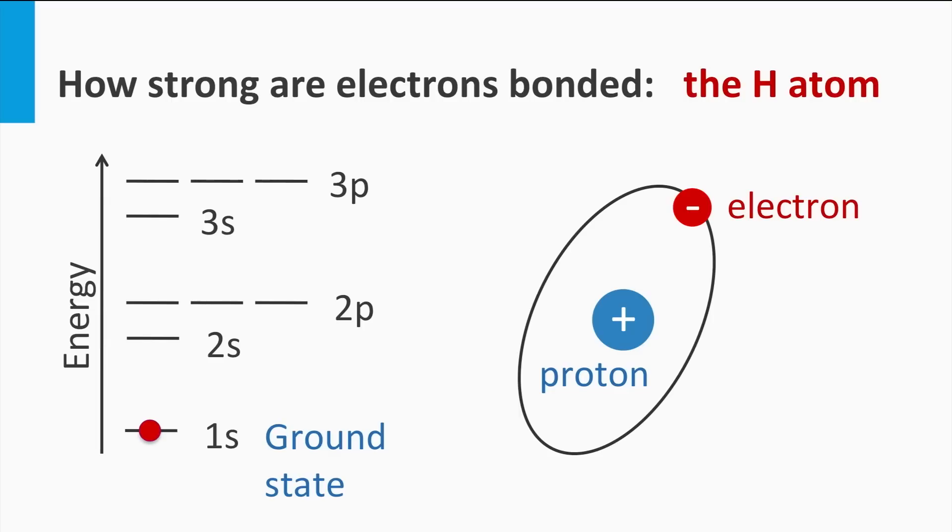If we give the electron more energy, it can be excited to a higher energy level, to the second shell. The electron is less strongly bound to the atom, and its average orbit is further away from the nucleus. In the second shell we find two types of electronic energy levels: 2s and 2p.